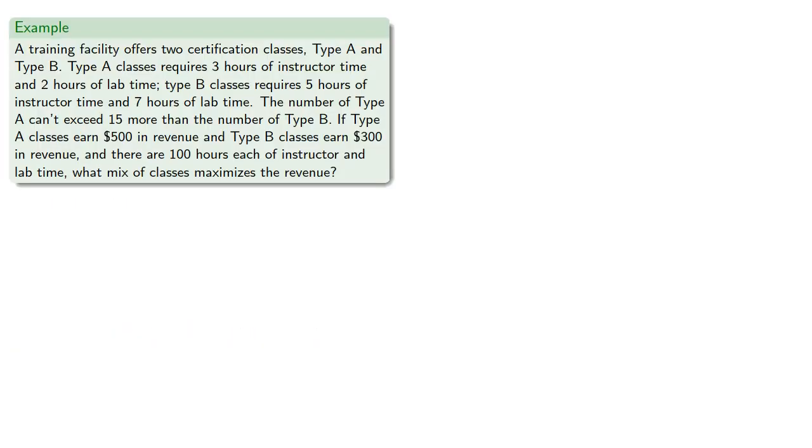Let's take a look at another example. Suppose we have a training facility that offers certification for two types of classes, A and B. These classes require different amounts of instructor and lab time, and there's some other restriction on the number of classes that they can offer.